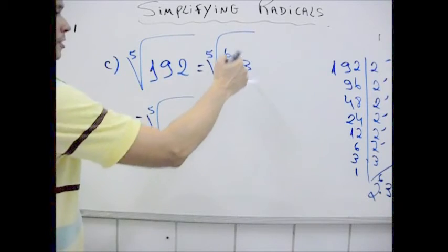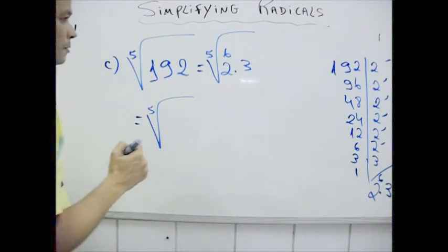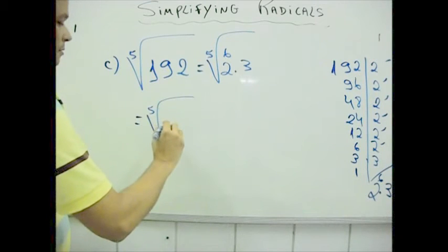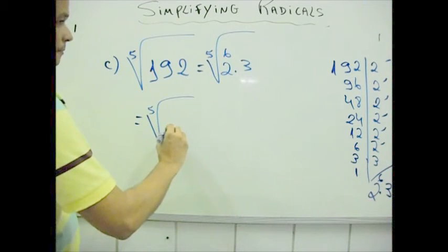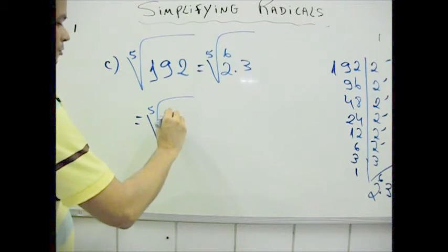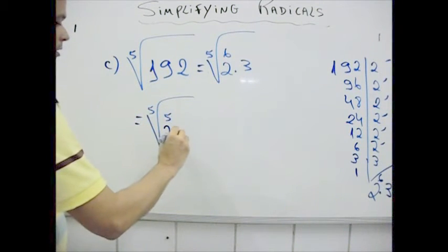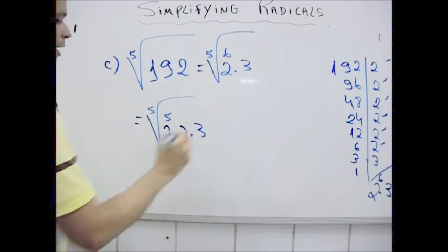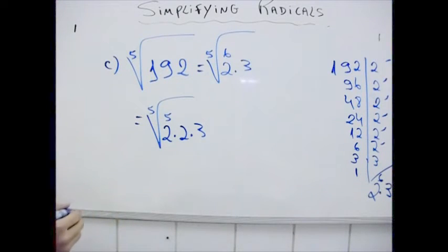2 to the 6th power can be represented like this: 2 to the 5th power times 2 times 3, alright.